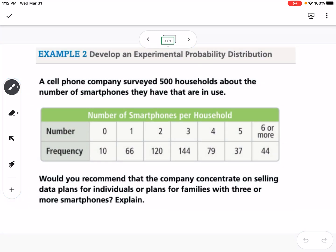Our second example says to develop an experimental probability distribution. A cell phone company surveyed 500 households about the number of smartphones they have that are in use. You can see in this table here, we have the number of smartphones per household, and we have the frequency. So how many households said that that is how many phones that they had.